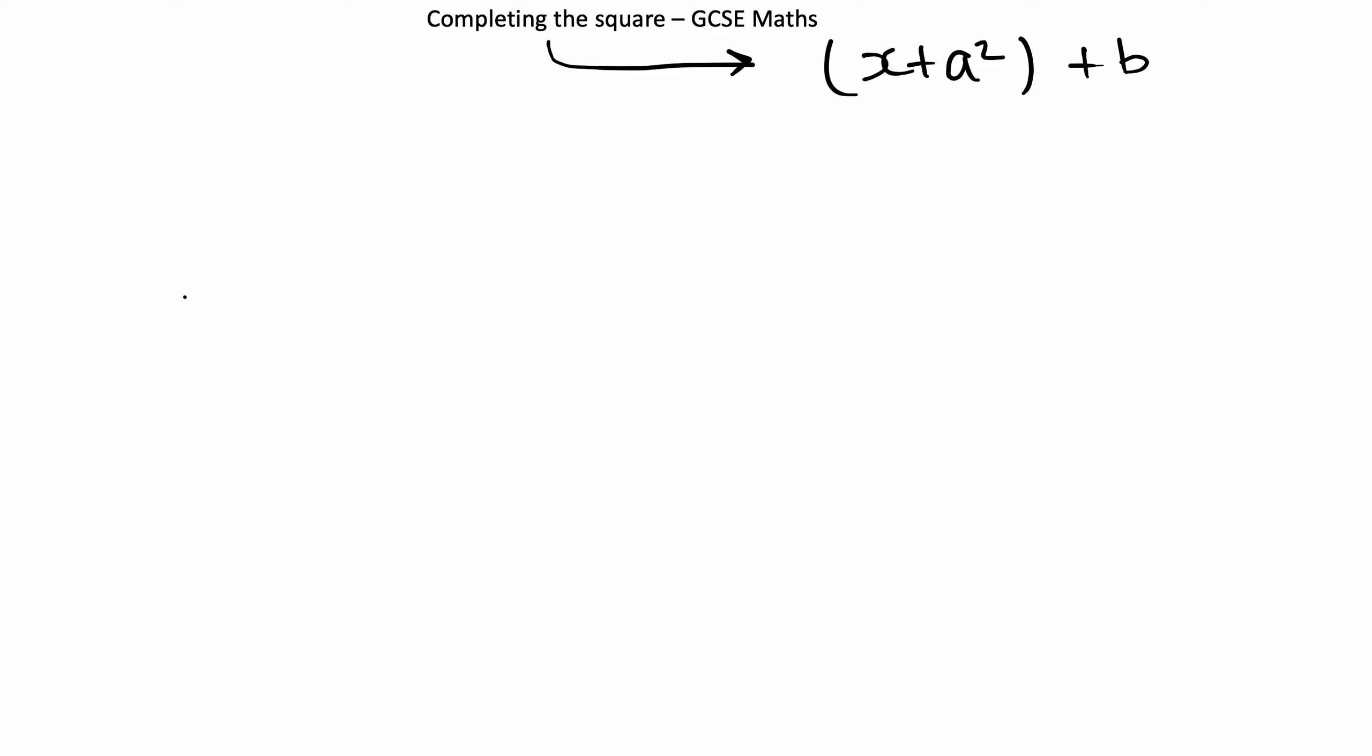We might have something like x squared plus 2x. In this video, I'm just going to try and explain the fundamental method to do this in as simple a way and as quickly as possible. So x squared plus 2x. I'll explain why we do this in just a second.